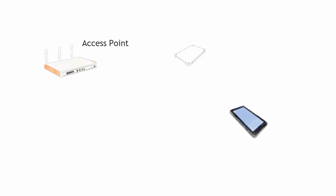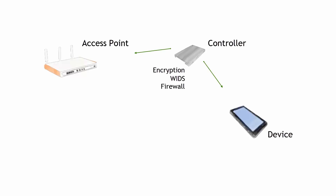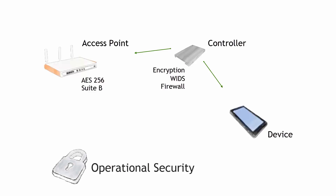There are a couple of components within the wireless environment: the access point, the mobile device, and the controller. We're going to spend some time today talking about functionality related to a wireless strategy. You have to have encryption, WIDs and firewall, AES, and Suite B encryption.